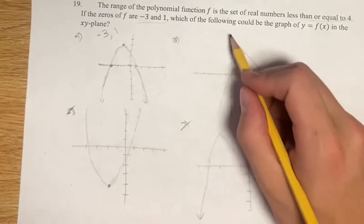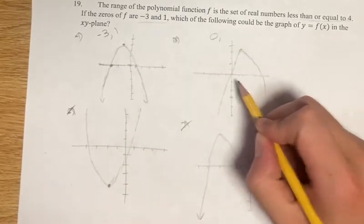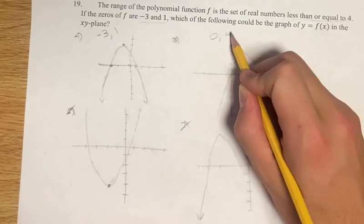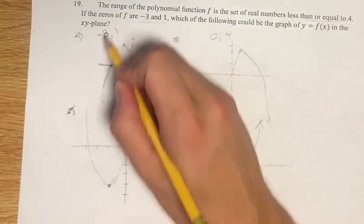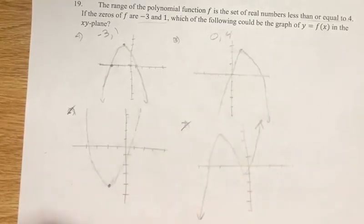And here, it's at the origin. So 0. And 1, 2, 3, 4. So the zeros of a are negative 3 and 1. The zeros of b are 0 and 4. So a is going to be your final answer.